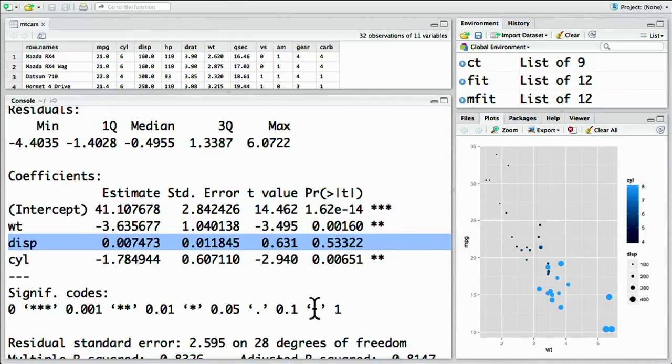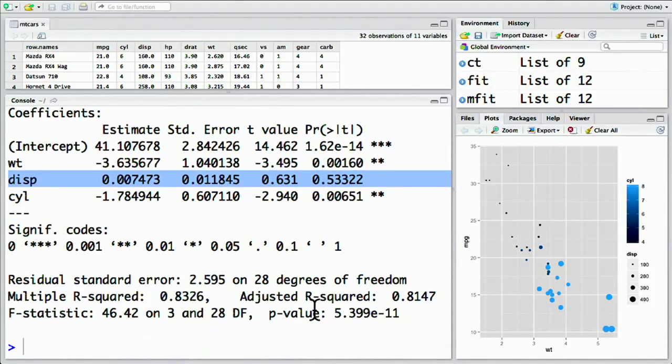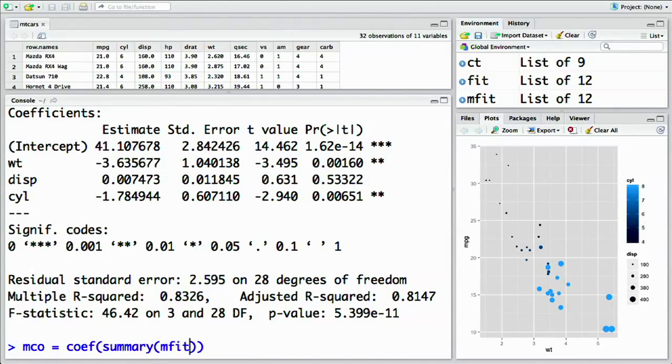Just like we did before, we can extract the coefficients table using the coef function. We'll do that as mco for multiple coefficients equals coef of summary of mfit.